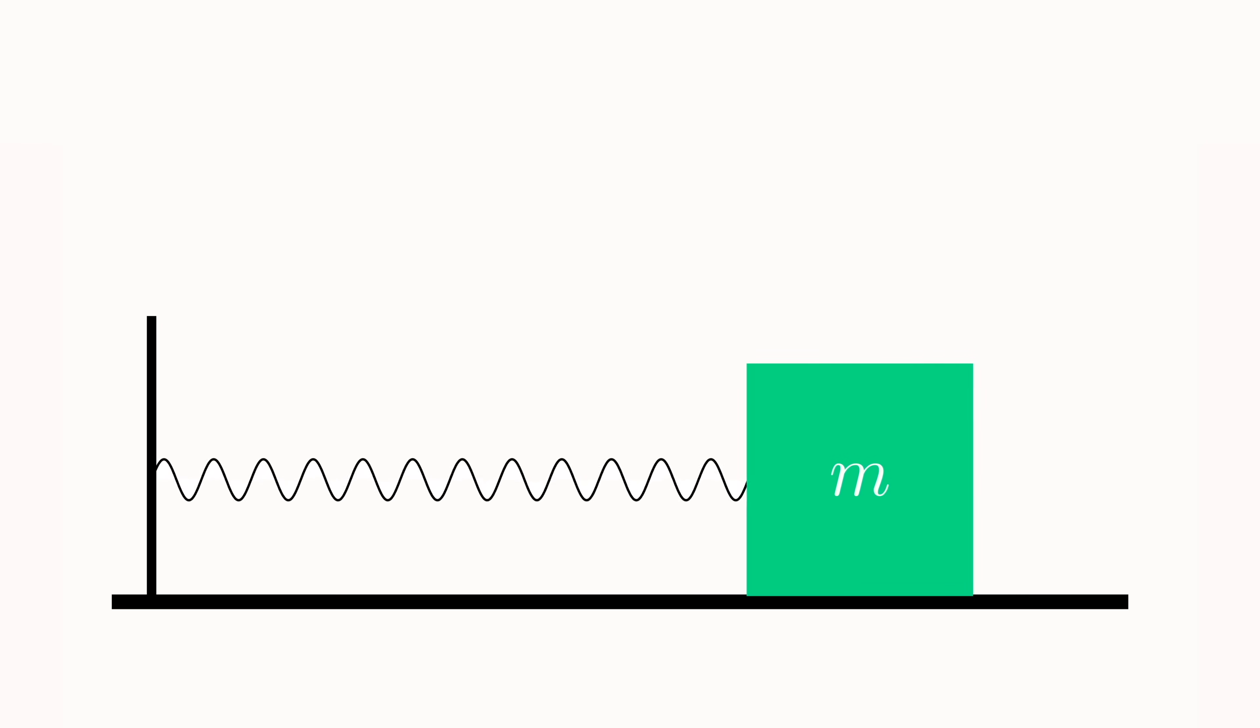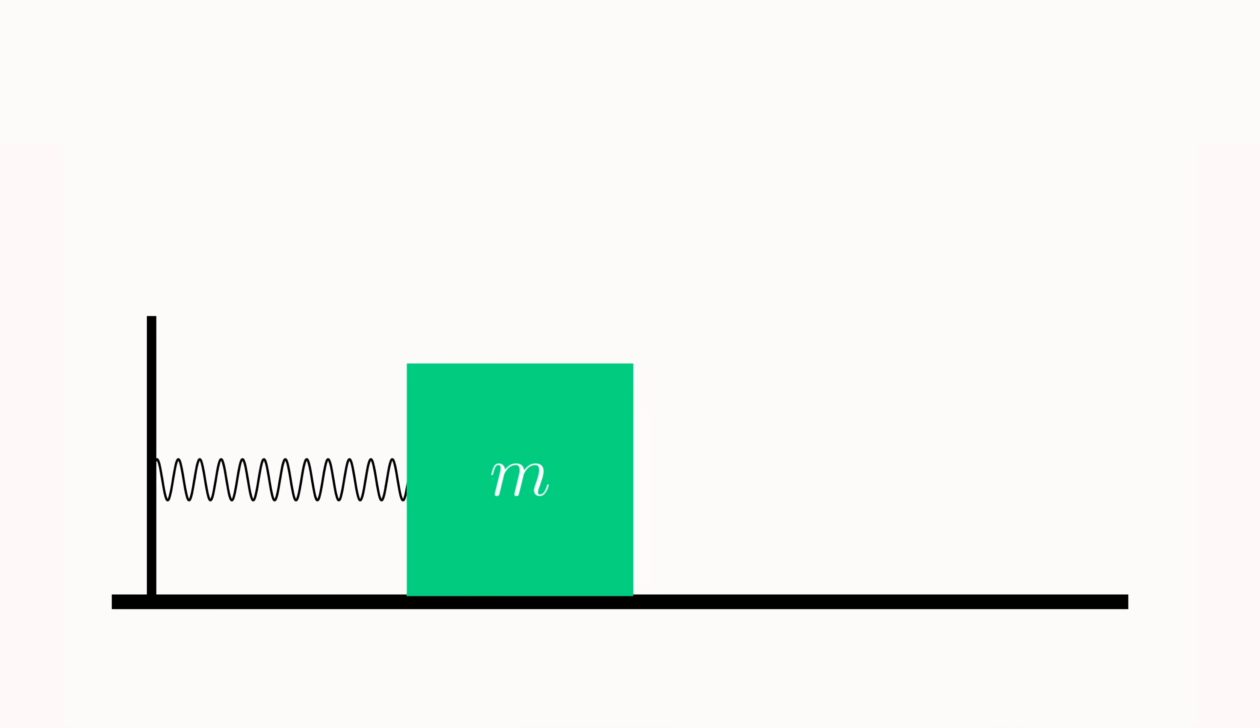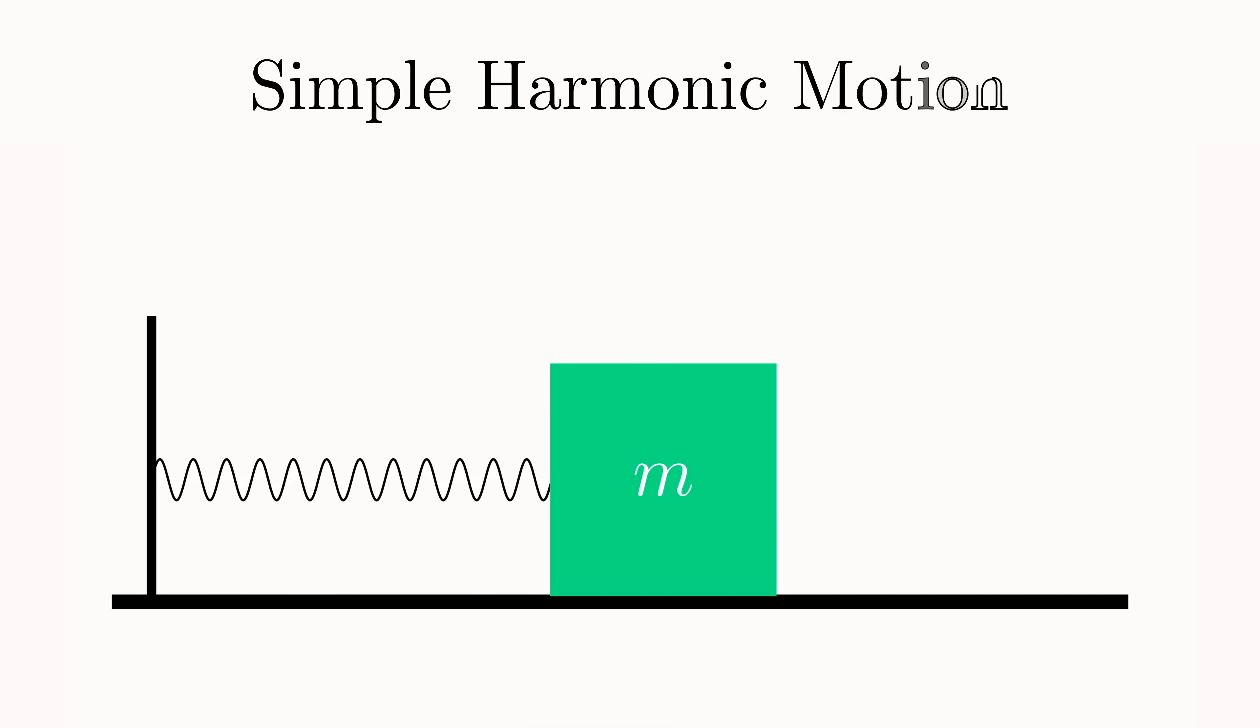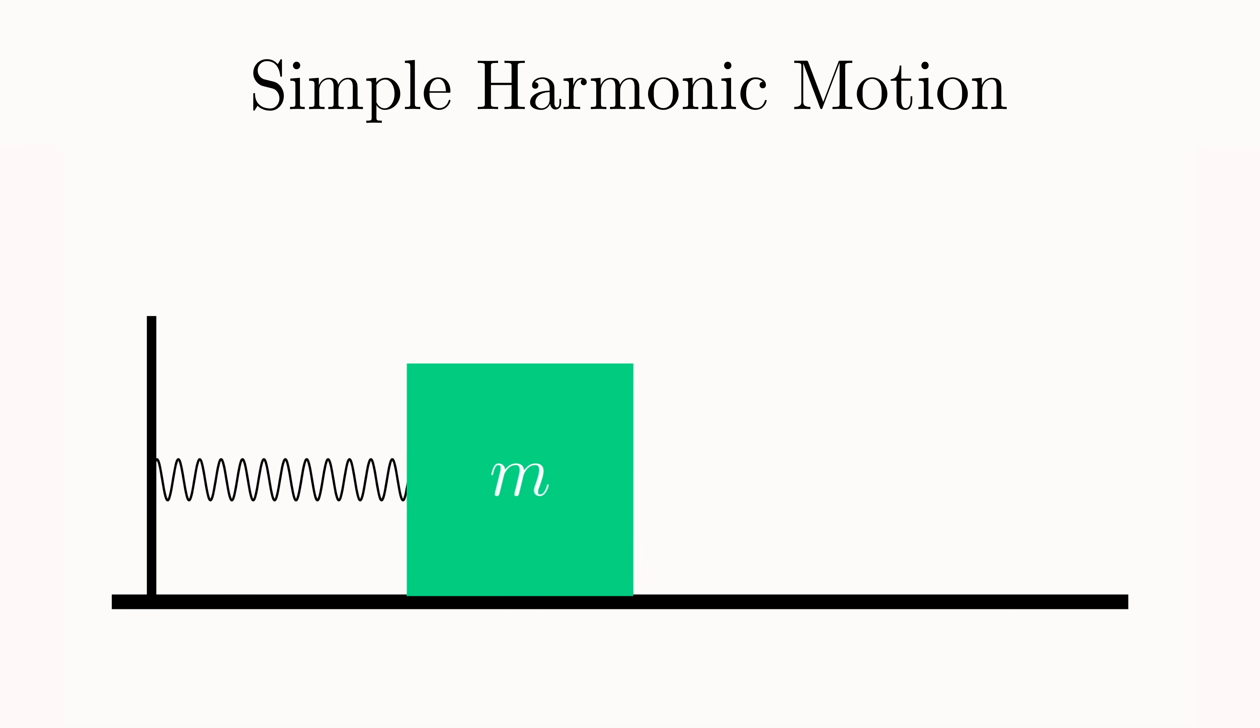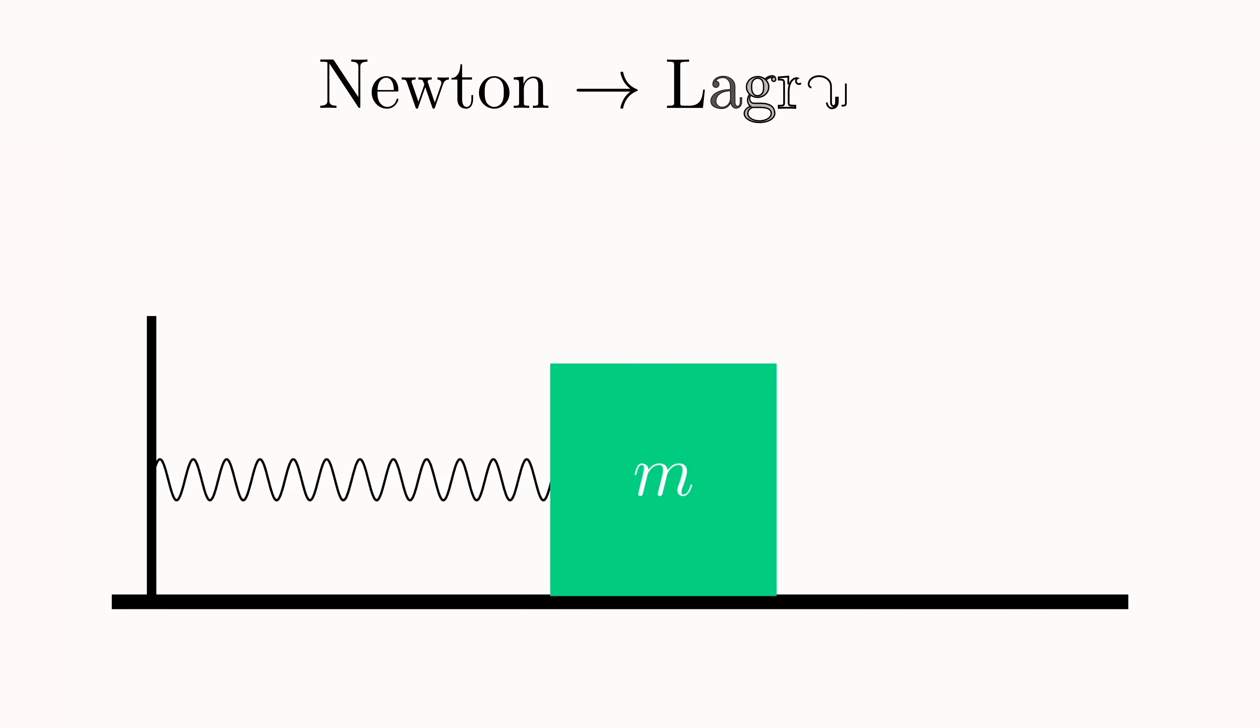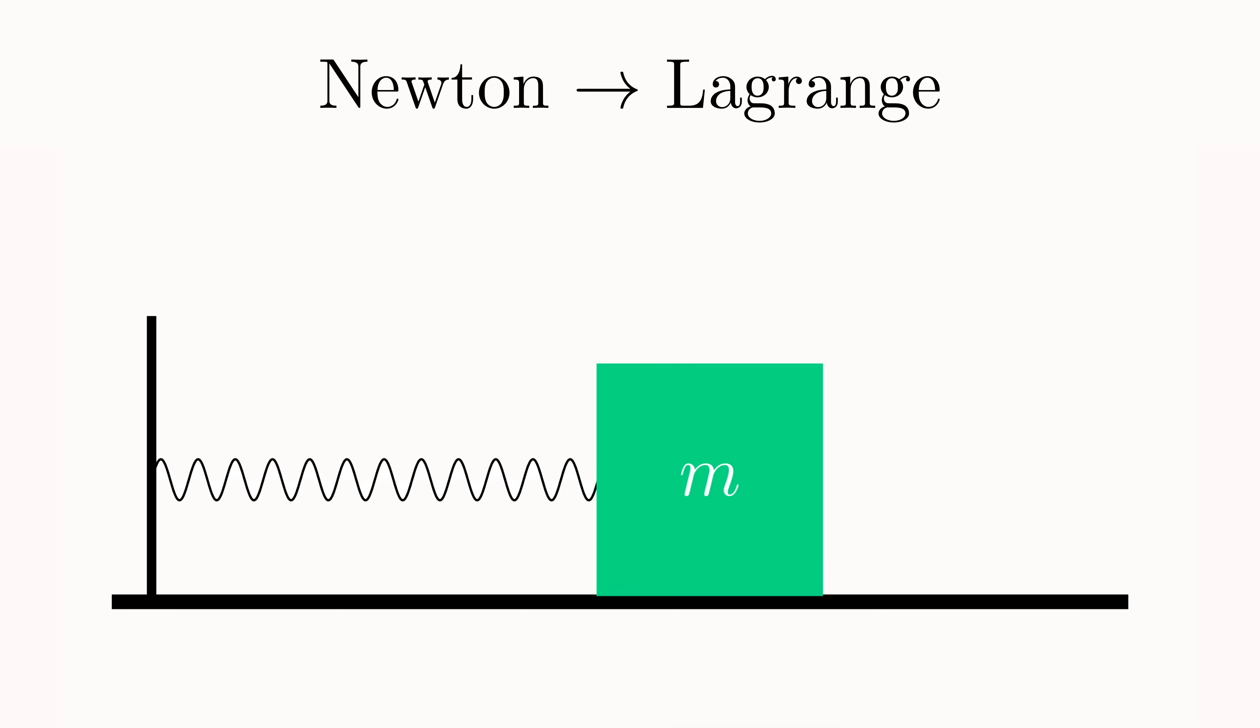Let's start by considering the motion of a mass on a spring, or in physics language, simple harmonic motion. It's the physicist's go-to model, and arguably the most fundamental of all physical models. We'll analyze it by first using Newton's approach, and then Lagrange's. In this model, the spring is massless, the box has a mass m, and the floor is frictionless.